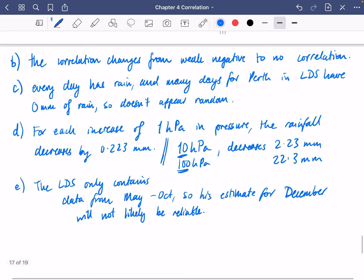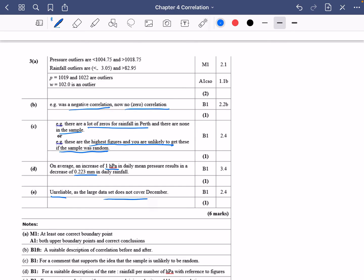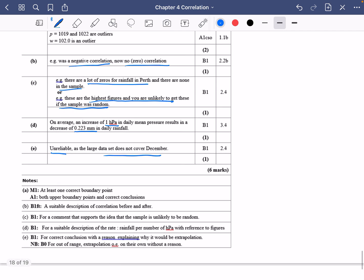Let's have a look at B, C, D and E in the mark scheme. So it was negative correlation and now there is no correlation. They say for part C that there are lots of zero rainfall in Perth and there are none in the sample or these are the highest figures and you're unlikely to get these if the sample was random. An increase of one hectopascal in daily mean pressure results in a decrease of this rainfall. It's unreliable as the large data set does not cover December.